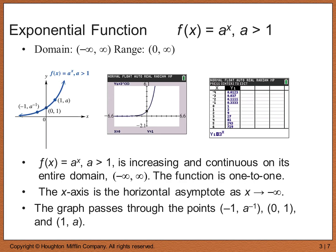To recap: if the base a is greater than 1, we get a function that's increasing and continuous on the entire domain. This graph passes the horizontal line test, so the function is one-to-one and has an inverse. There's a horizontal asymptote as x approaches negative infinity — y values approach 0 — and the graph passes through (0, 1).